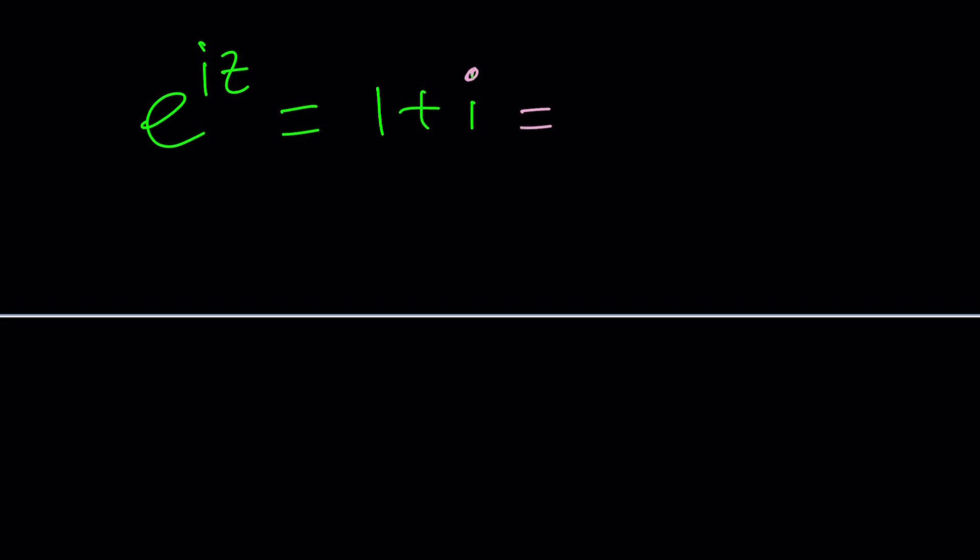It can be written, wait a minute, did we talk about it? No, not really. But any complex number can be written as r times e to the i theta, thanks to Euler's formula again. So now this is going to be root 2 times e to the power i pi over 4. But you've got to be careful because we can add multiples of 2 pi, I mean 2 pi n, right?